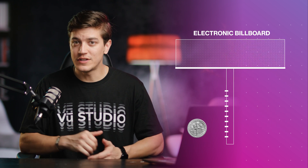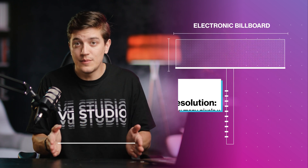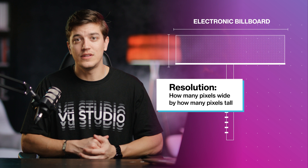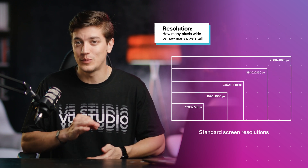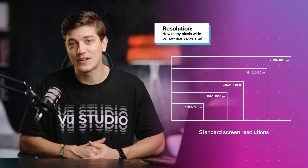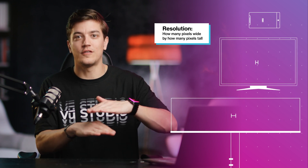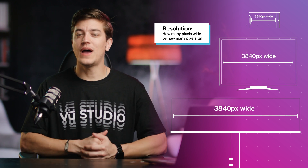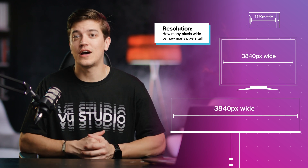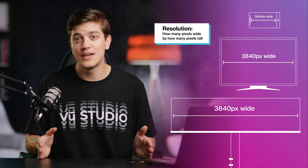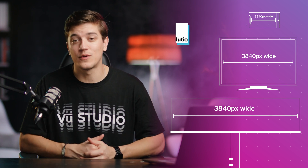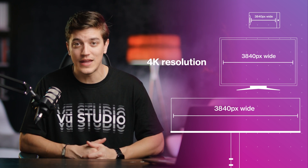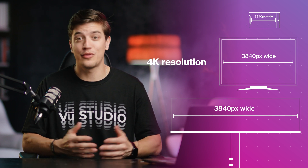Resolution is simply how many pixels wide by how many pixels tall. The distance between the pixels — the DPI or the pixel pitch — does not directly impact the resolution unless we physically constrain the size of our display. So if you have a display that is 3840 pixels wide by 2160 pixels tall, you have a 4K resolution display even if those pixels are three feet apart.